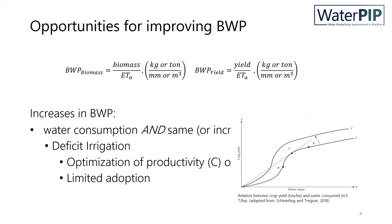Now looking at the second way to increase biophysical water productivity — to decrease water consumption while maintaining or increasing biomass or yield — there is a clear and tangible option: that of deficit irrigation.